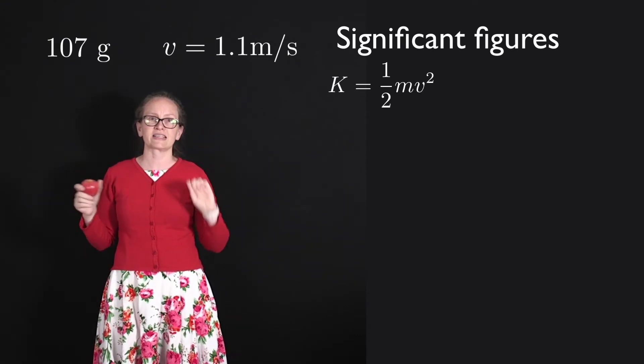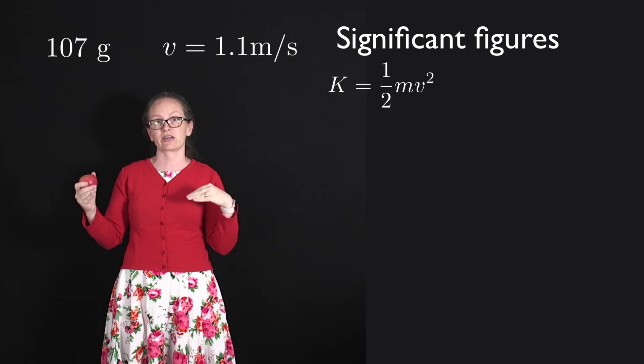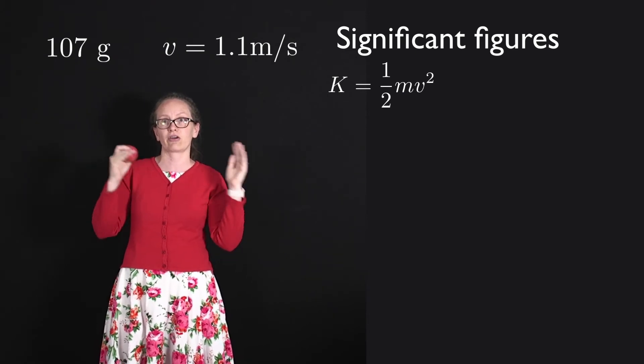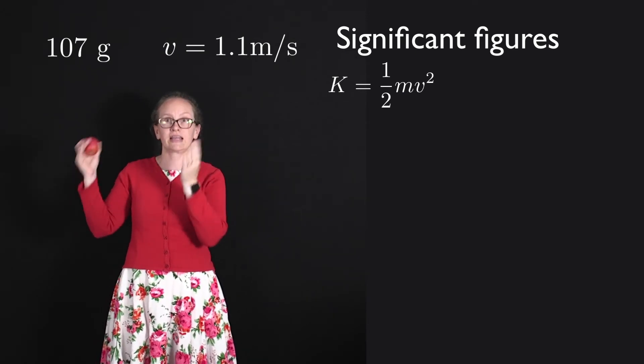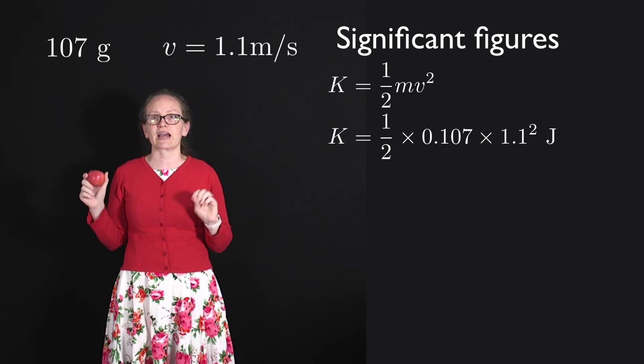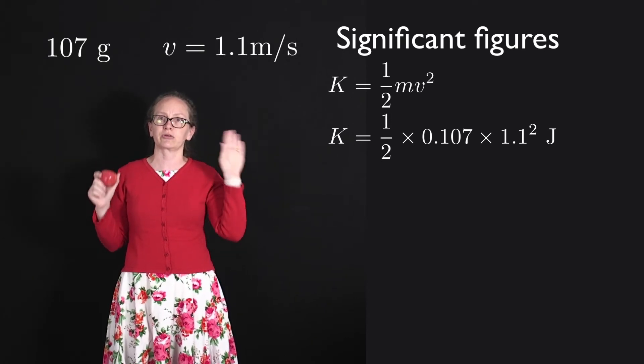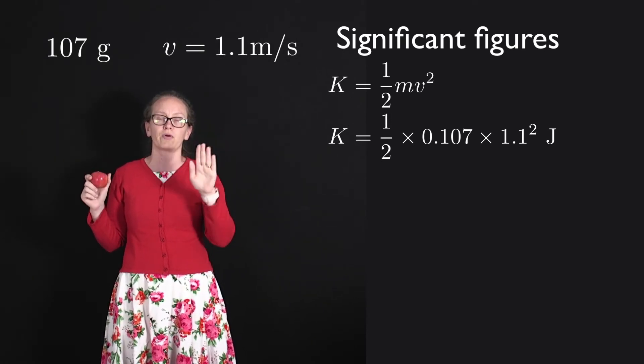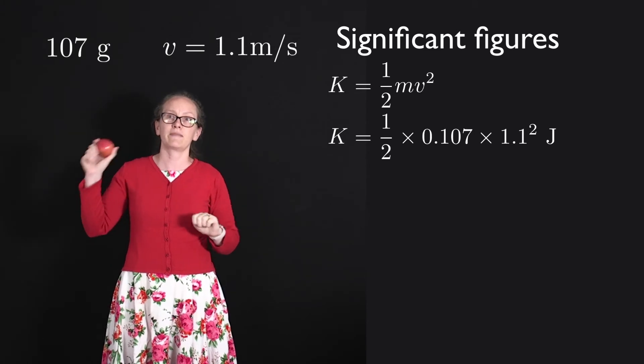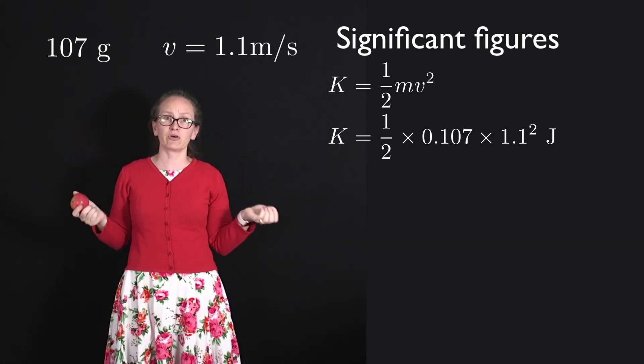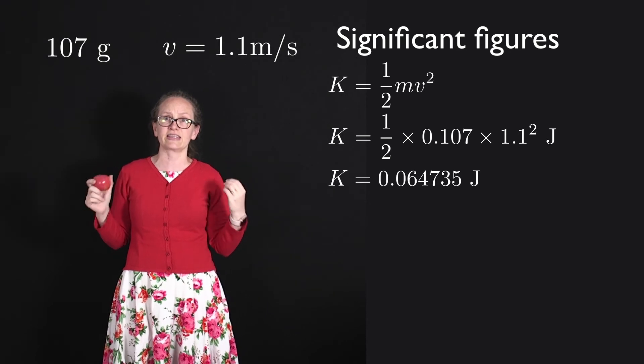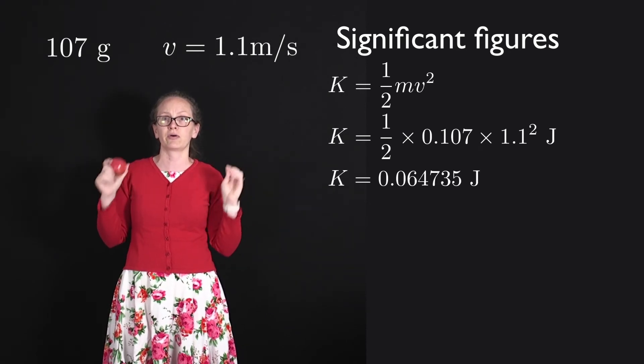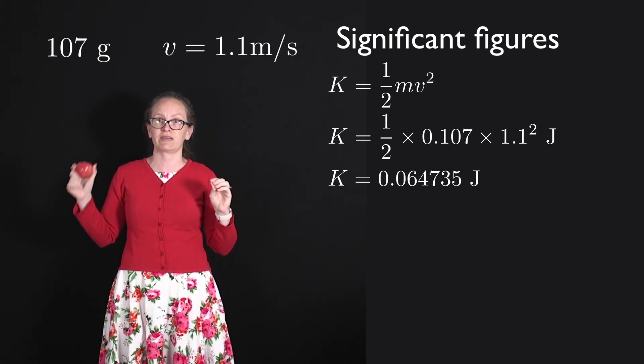So I know the mass is 107 grams, which I'll put into SI units, which is kilograms, so that's 0.107 kilograms. So when I'm doing this calculation, the kinetic energy is equal to a half times 0.107 times 1.1 squared. And when I put all that into the calculator, I get that this is equal to 0.064735 joules.